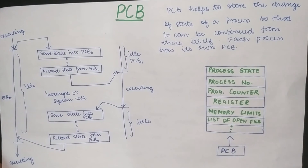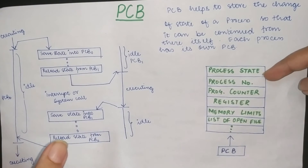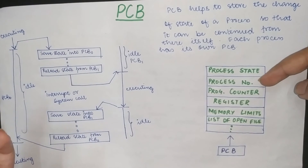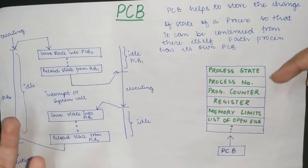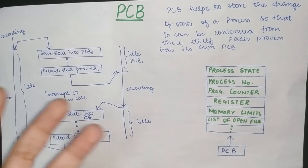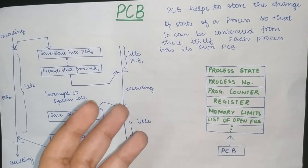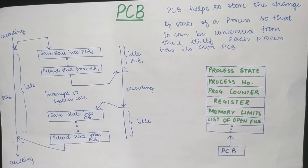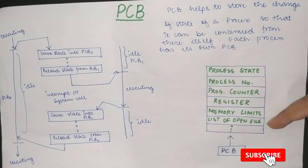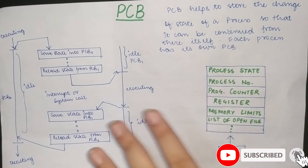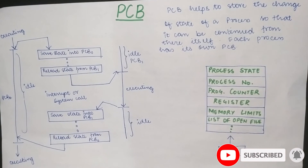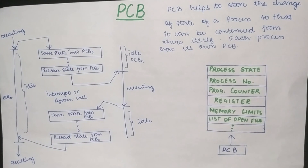Now, what do we need to store in the PCB? We store the process state, process number, program counter, registered number of instructions, and memory limits. So this was the basic idea of PCB. Thank you.